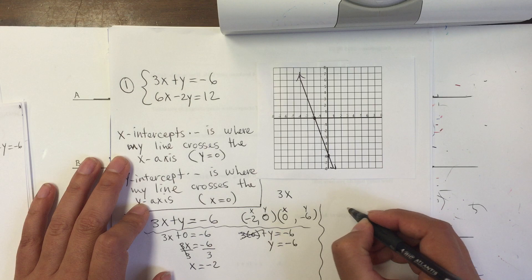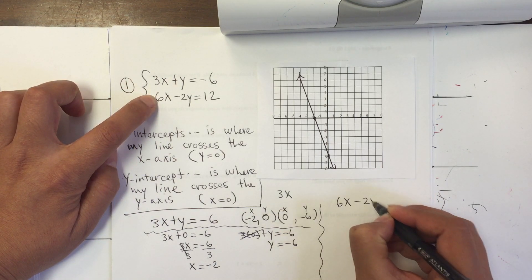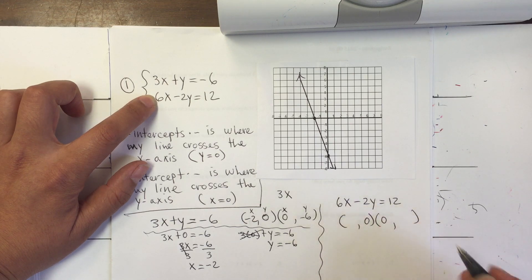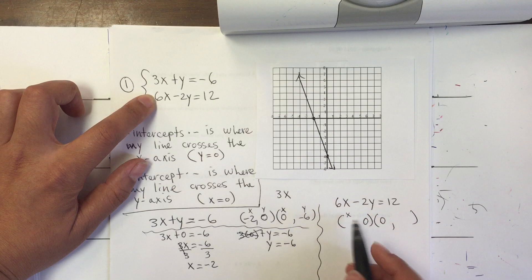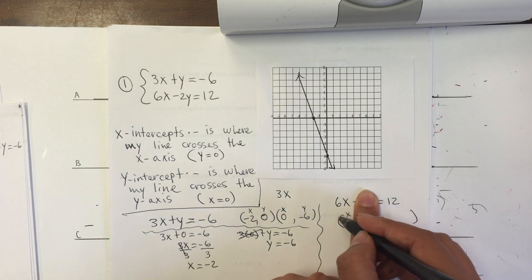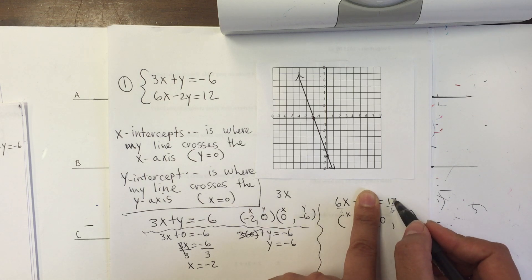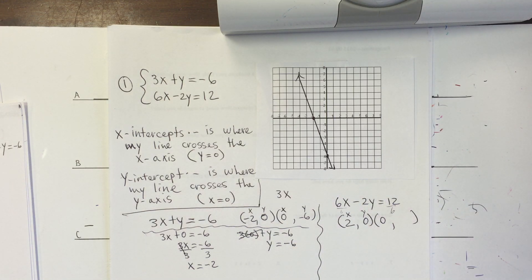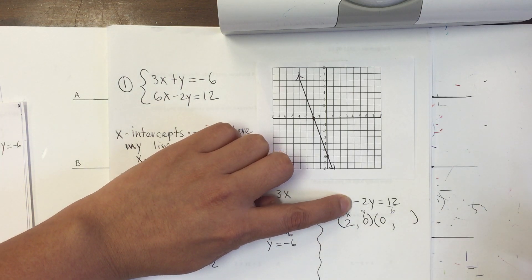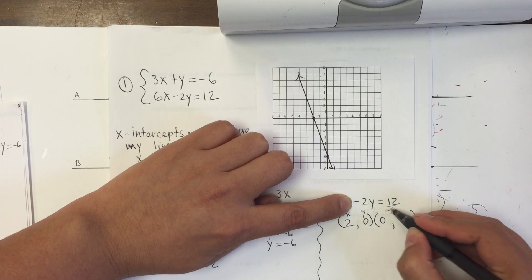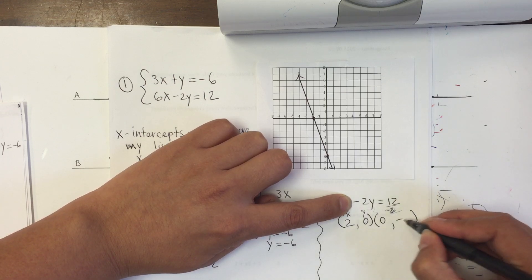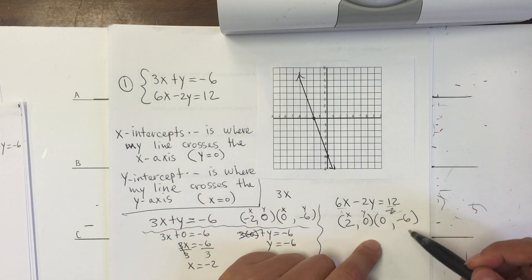For the next equation, 6x minus 2y equals 12, I'm going to do the same thing and find the intercepts. If y is 0, I replace it with 0. Negative 2 times 0 is 0, so I can just divide by 6. 12 divided by 6 is 2, so x equals 2. When x is equal to 0, I cover the x term, divide by negative 2, and y equals 12 divided by negative 2, which is negative 6. That's the shortcut.